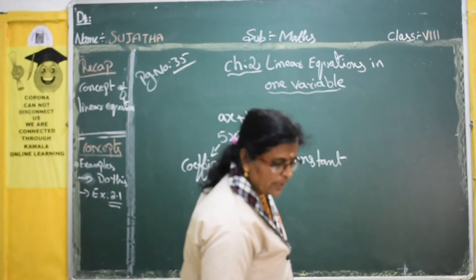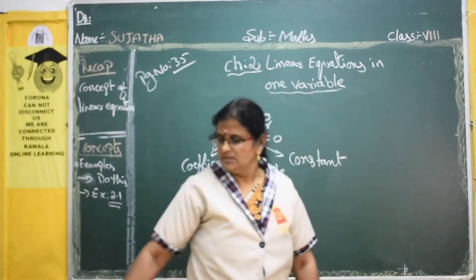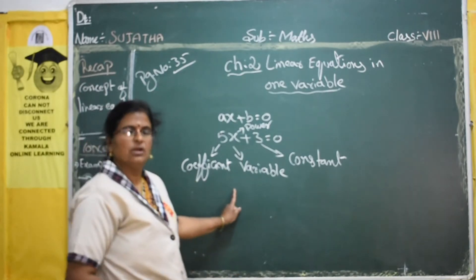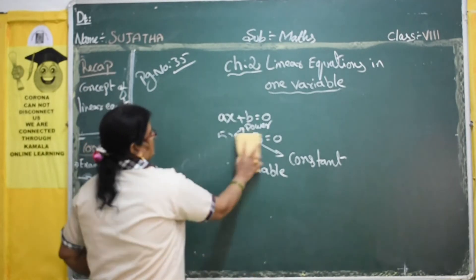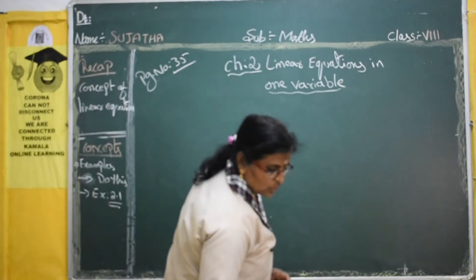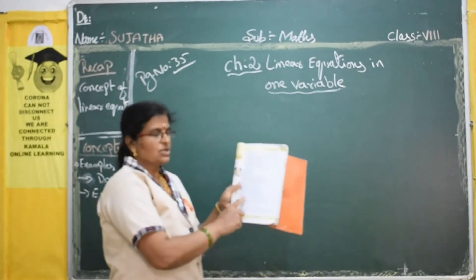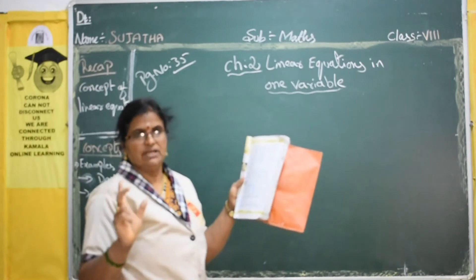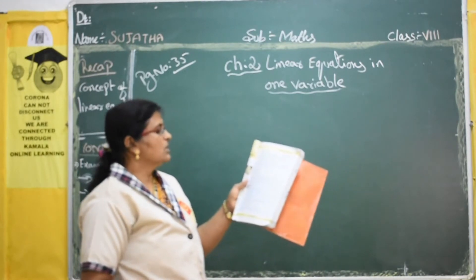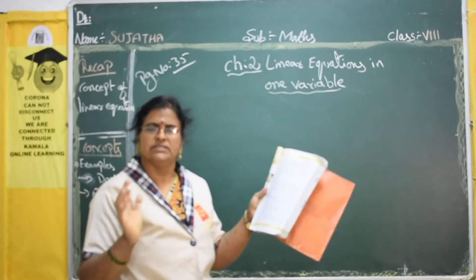Open your textbook to page number 5. Now, which of the following are linear equations? I will explain the first one, and you have to do the remaining. For the first one, 4x plus 6 equals 8 — is it a linear equation? Yes, because the variable is 1 and the power is 1. Put a tick.